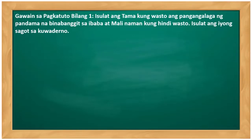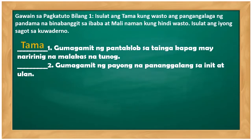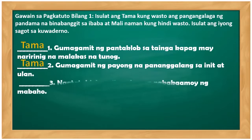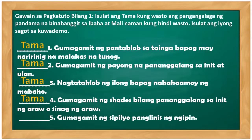Gawain bilang isa: isulat ang tama kung wasto ang pangangalaga ng pandama at mali kung hindi wasto. Number one: gumagamit ng pantaklub sa tainga kapag may naririnig na malakas na tunog — Tama. Number two: gumagamit ng payong na pananggalang sa init at ulan — Tama. Number three: nagtataklub ng ilong kapag nakakamoy ng mabaho — Tama. Number four: gumagamit ng shades bilang pananggalang sa init ng araw — Tama. Number five: gumagamit ng sipilyo panglinis ng ngipin — Tama.